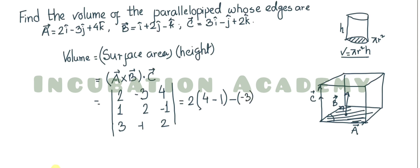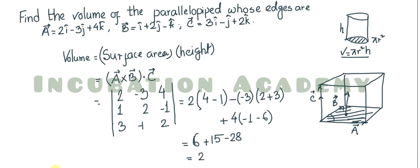Continuing: −(−3) × (1×2 − 3×(−1)) = +3 × (2 + 3) = 3 × 5 = 15. Then +4 × (1×(−1) − 3×2) = 4 × (−1 − 6) = 4 × (−7) = −28. So total = 6 + 15 − 28 = −7. Since volume must be positive, we take the absolute value, giving a volume of 7.